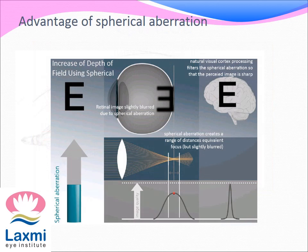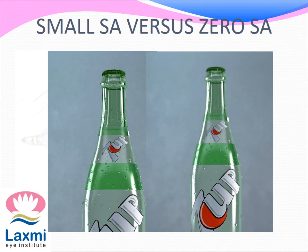The advantage of having a spherical aberration is that it gives a depth of field by increasing the range of distance of focus instead of focusing on a single point. The image is blurred in this range, but the visual cortex filters out the aberration, giving the perceived image as a sharp one. Thus, having a small positive spherical aberration is ideal rather than having no aberration. As seen in this photograph, the image on the left is perceived through a surface with small positive spherical aberration, where the droplets on the bottle neck and the crown details are seen simultaneously due to the range of focus. The image on the right is seen through a surface with zero spherical aberration, where the bottle is seen as a sharp image with the droplets on the neck, but the crown details are blurry due to loss of range of focus.